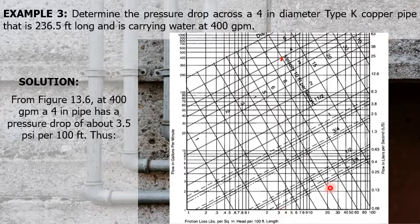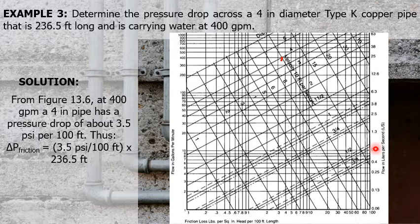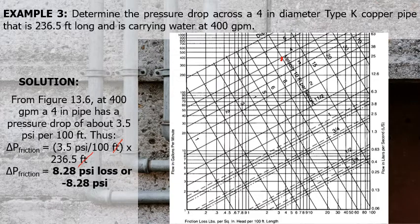From Figure 13.6, at 400 GPM, a 4-inch pipe has a pressure drop of about 3.5 psi per 100 feet. Thus, to compute for the pressure drop, we simply multiply 3.5 psi per 100 feet times the length of the pipe, which is 236.5 feet. This unit will be cancelled. Calculating, that is equal to 8.28 psi loss, or negative 8.28 psi, which is the pressure drop.